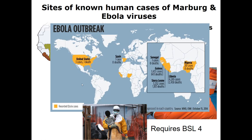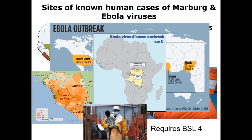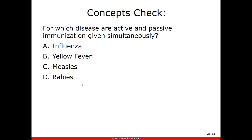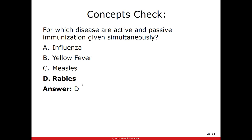Concept check question: for which disease are active and passive immunizations given at the same time? It's rabies. Because the virus is so slow, we can give the active vaccine to wake your immune system up to the virus even after exposure, while also providing passive antibodies at the bite site. Most of the time passive immunization is given afterwards because you didn't do the active first, but rabies is an exception.